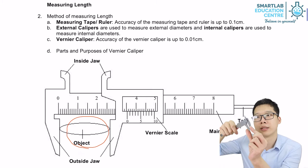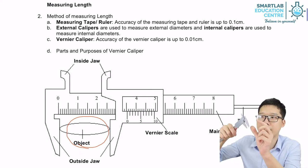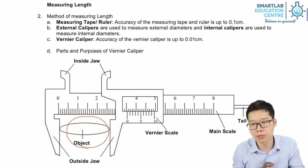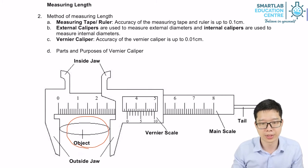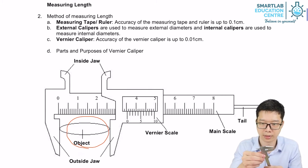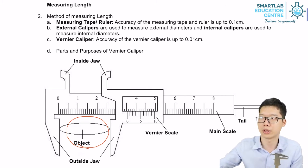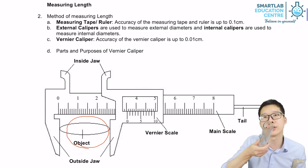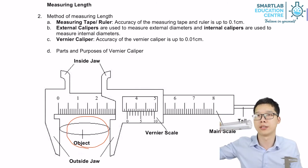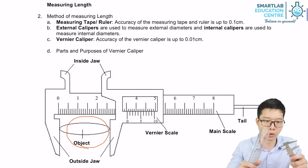Instead of measuring the external distance or diameter, I can also measure the internal distance using the inside jaws. For example, if I want to measure the internal diameter of this cylinder-shaped tube, I open it up.